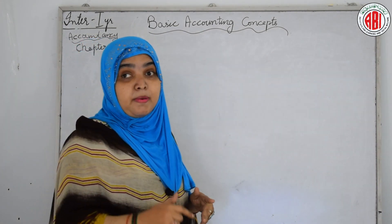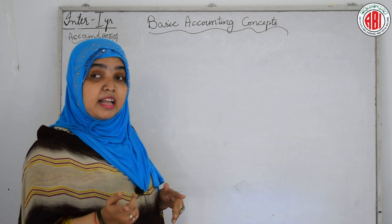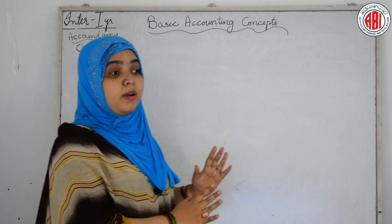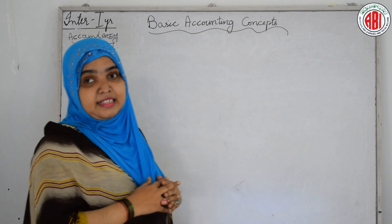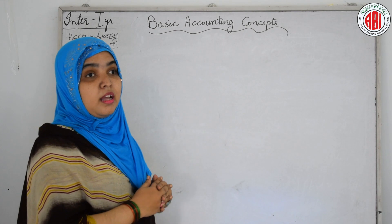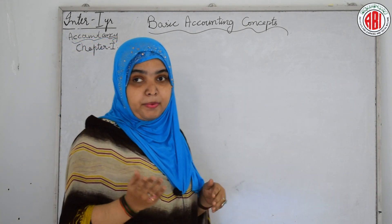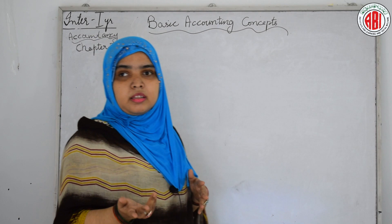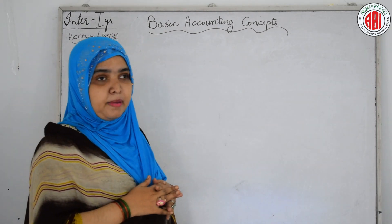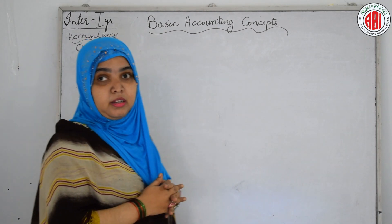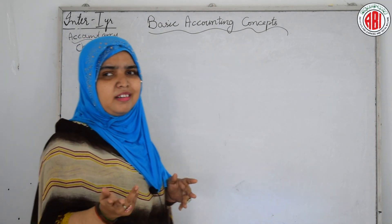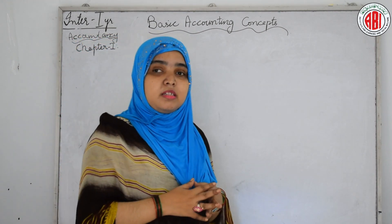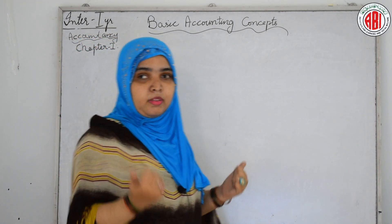Intangible assets are those which do not possess any physical existence. Examples are copyrights, patents, and of course goodwill. Goodwill we can't touch — it is the good name of the business because of which the businessman earns money.